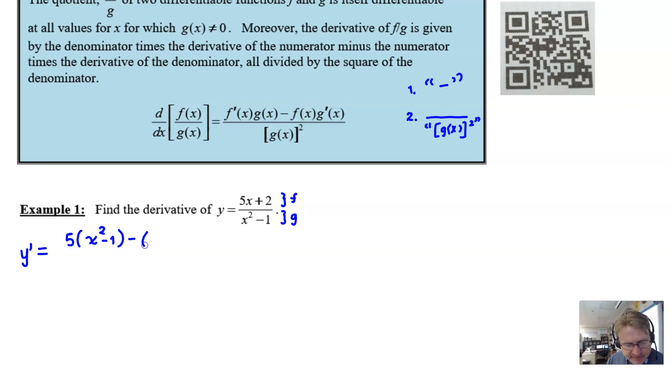And then we have a subtraction. f of x is going to be 5x plus 2. And then g prime is the derivative of the denominator, which is 2 times x.